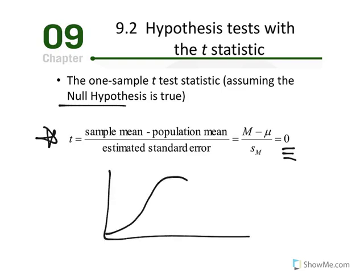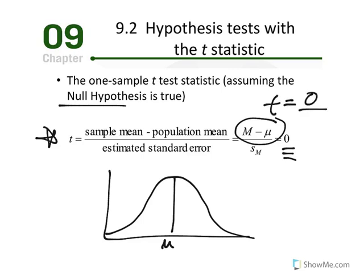Visually, if there is no mean difference — the population mean is in the center — then the sample mean minus the population mean equals zero, so our t-value equals zero. Regardless of what our estimated standard error equals, say two, the t-value would still equal zero. The null says nothing is happening, and if nothing is happening, we should not see a difference between the sample mean and the population mean. So t equals zero in the center, and that value represents the null.